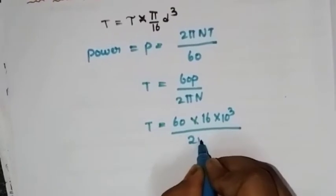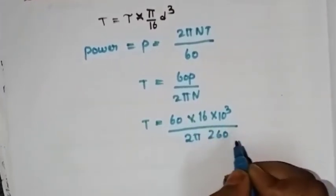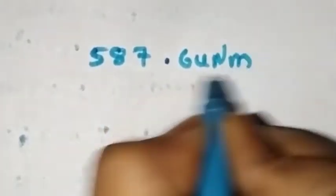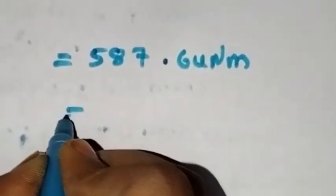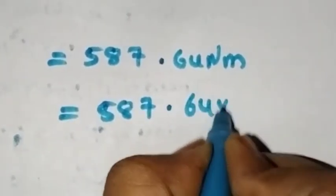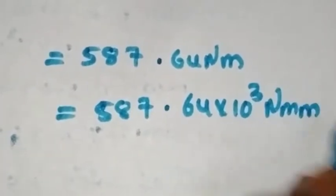Substituting values: 16 into 60 into 10 power 3 divided by 2 pi into 1260. T equals 10 power 3.